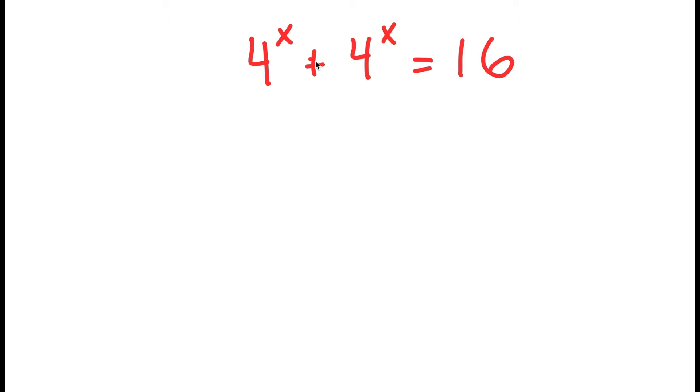So I'm going to first start by factoring out 4 to the power of x from my left-hand side. So I get 4 to the power of x times 1 plus 1 is equal to 16. And this is equal to 4 to the power of x times 2 is equal to 16.